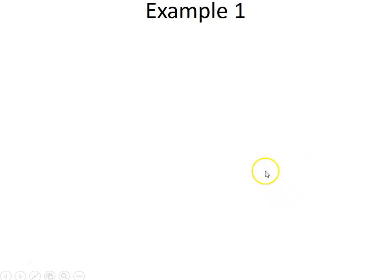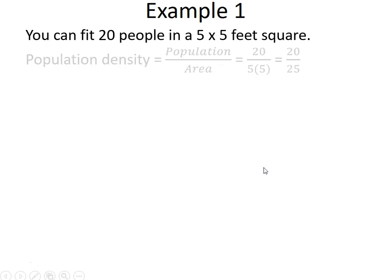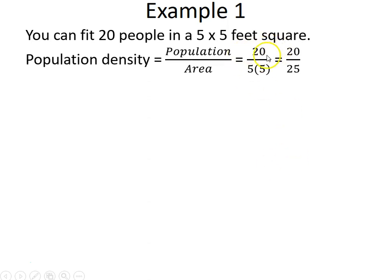In example one, it says you can fit 20 people in a 5 by 5 square. Using this ratio, how many people can fit in a 500 by 500 foot square? Our population density equals population over area, so we take 20 people over 5 times 5 feet, which gives us 20 over 25.